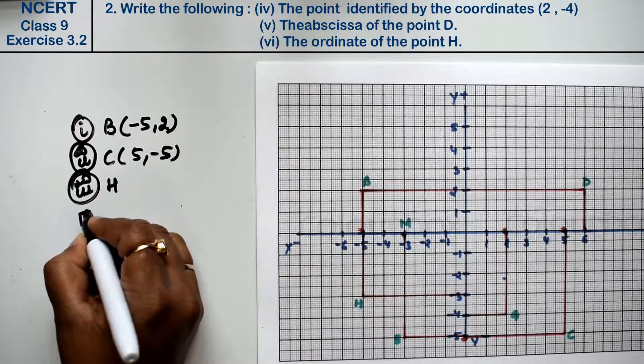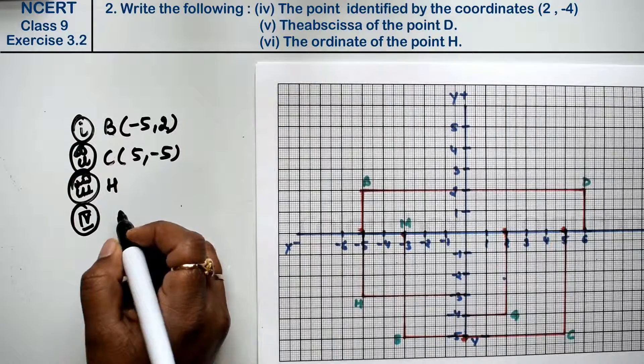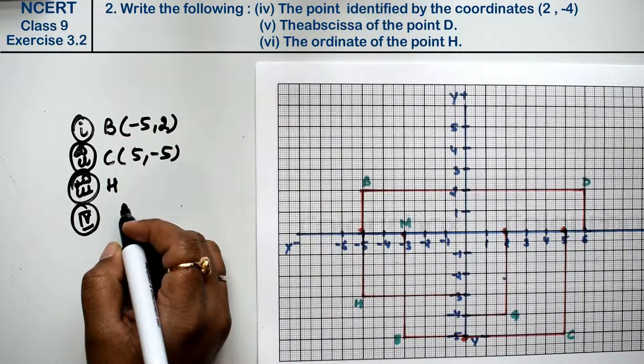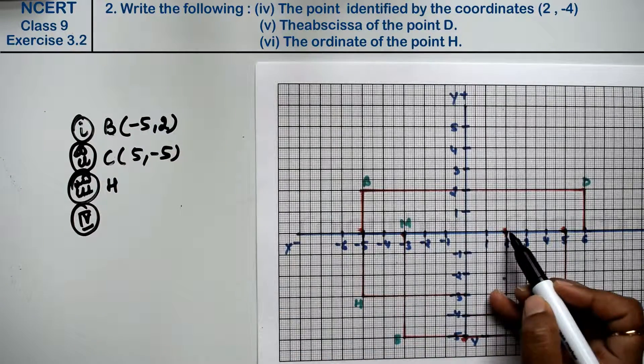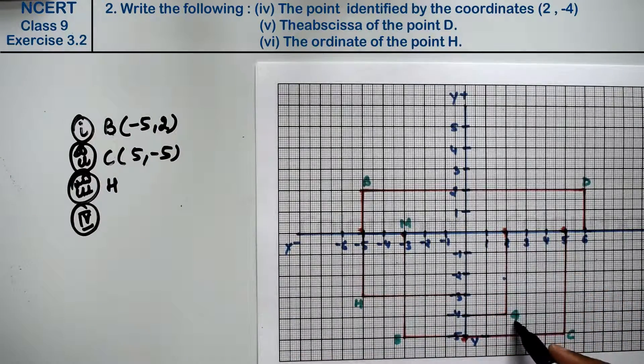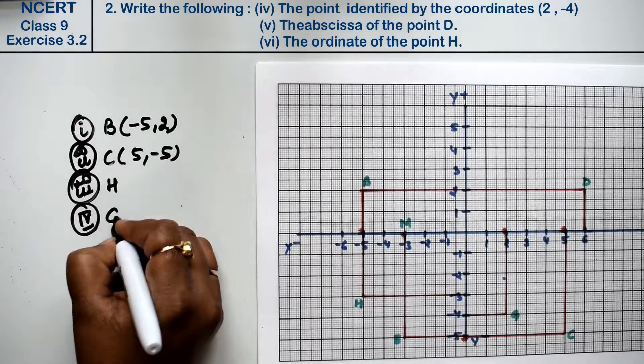Let's do fourth part. Fourth part is the point identified by the coordinates 2 and minus 4. x is 2 and y is minus 4. What is the answer? G. Right, friends?